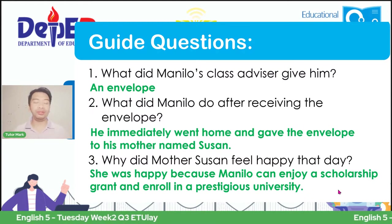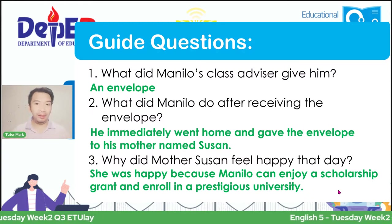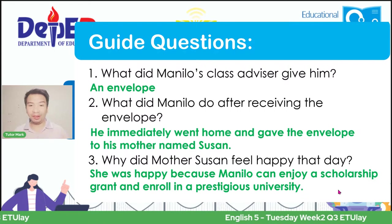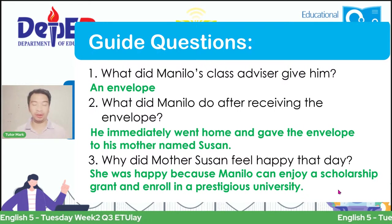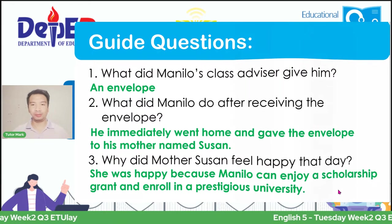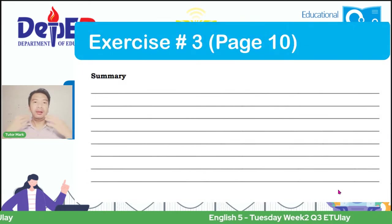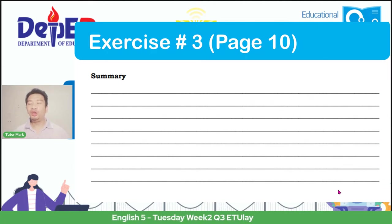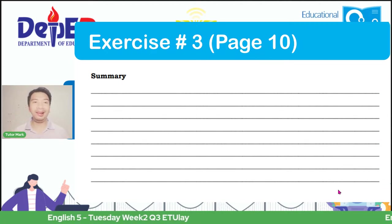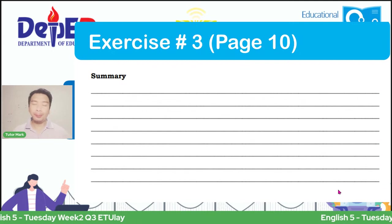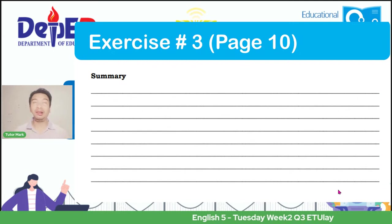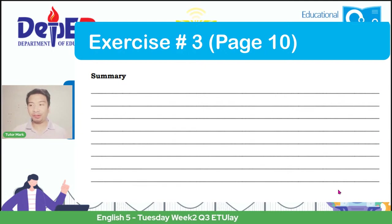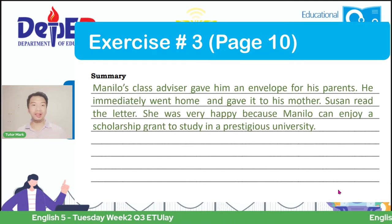And from there, we can shorten the long context. Number three: why did Mother Susan feel happy about that day? If your answer is 'she was happy because Manilo can enjoy a scholarship grant and enroll in a prestigious university,' then you are correct. We got all of this because we comprehended the story, and when all of these are indicated, we can now summarize it into bits and pieces.